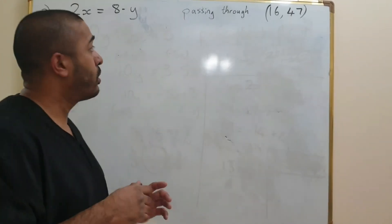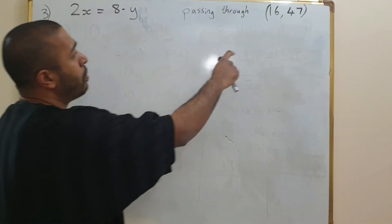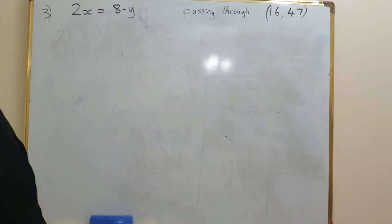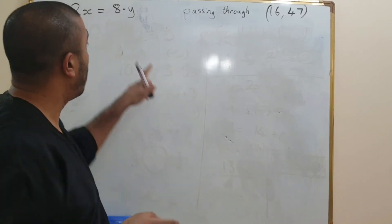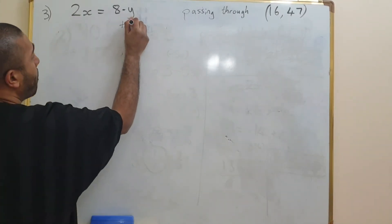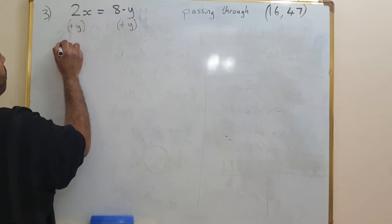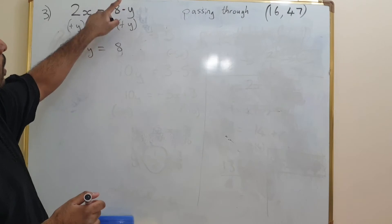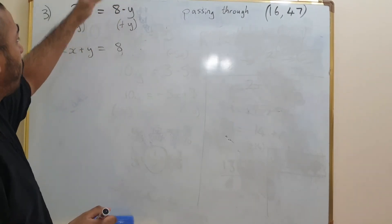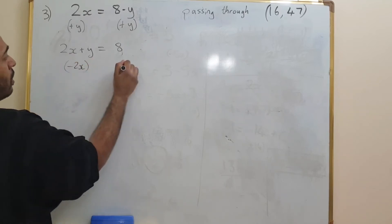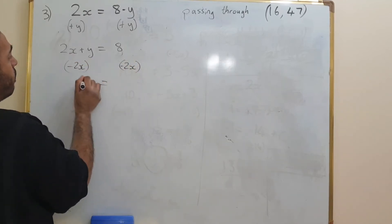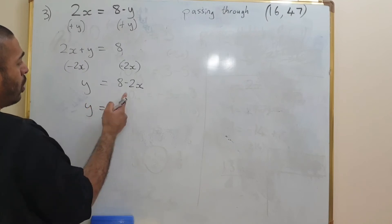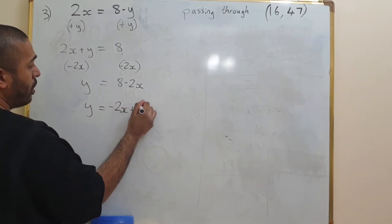Question 3 asks us to find the line which is perpendicular to this line, passing through the points (16, 47). First, rearrange into the form y equals mx plus c. To keep y positive, add y to both sides, giving 2x plus y equals 8. Now subtract 2x from both sides, giving y equals 8 minus 2x. Rearranging: y equals minus 2x plus 8. That is the equation of the original line.